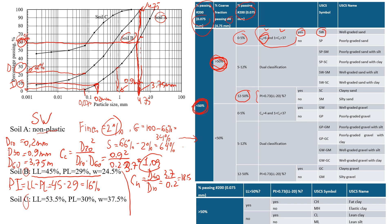Now we look at plasticity index and liquid limit. The plasticity index is 16, and we check if it's greater than 0.73 times (liquid limit − 20), which is 0.73 × (45 − 20). That threshold value is actually greater than 16, so the answer is no. When the answer is no, the soil is classified as SM — silty sand.